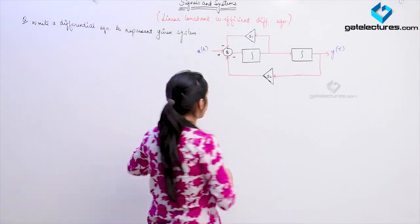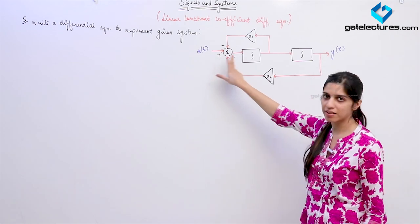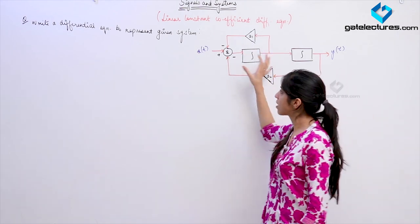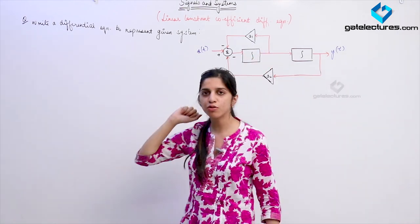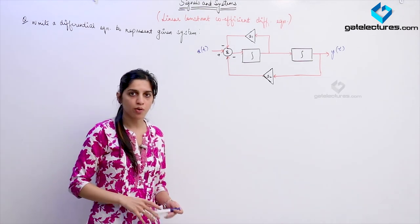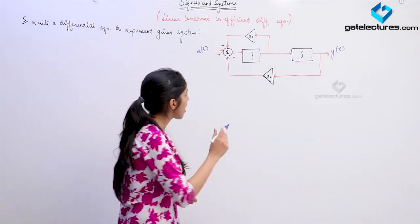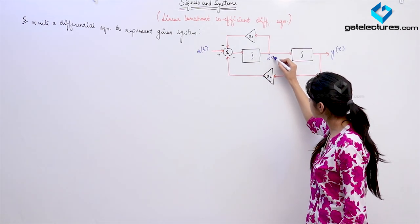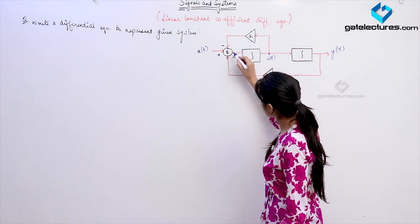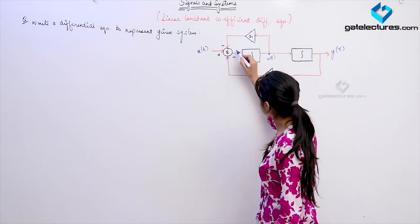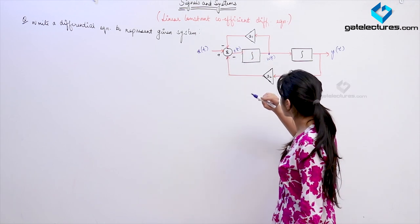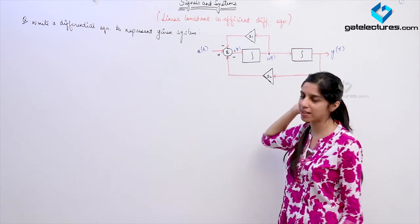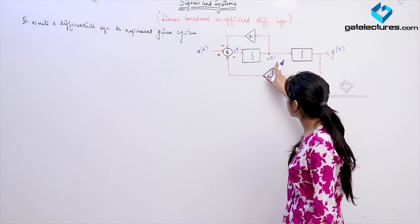They have given an interconnection of elements: integrators, a summer, and scalar multipliers. They are asking you to represent the system using a differential equation. Wherever we have different signals, suppose at one point the signal is W(t) and after the summer the signal is E(t). This approach is helpful — if you try to deal with X(t) and Y(t) directly you will get very confused.